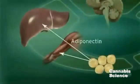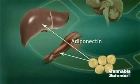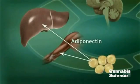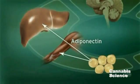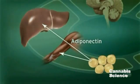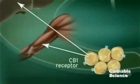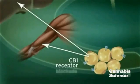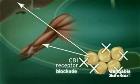Adiponectin, another hormone secreted by adipocytes, regulates lipid and glucose metabolism. Adiponectin is believed to regulate fatty acid oxidation in muscle and liver, thus improving insulin sensitivity. CB1 receptor stimulation in adipocytes reduces adiponectin, while CB1 blockade increases adiponectin synthesis.